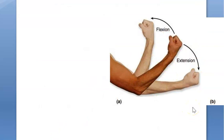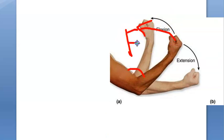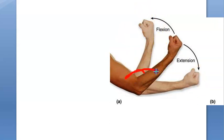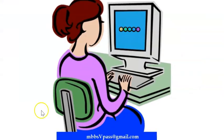Flexion and extension: bring your hand toward you and the angle reduces — that is flexion. Increasing the angle is extension. For example, flexing the head means bringing it toward the chest, reducing the angle.